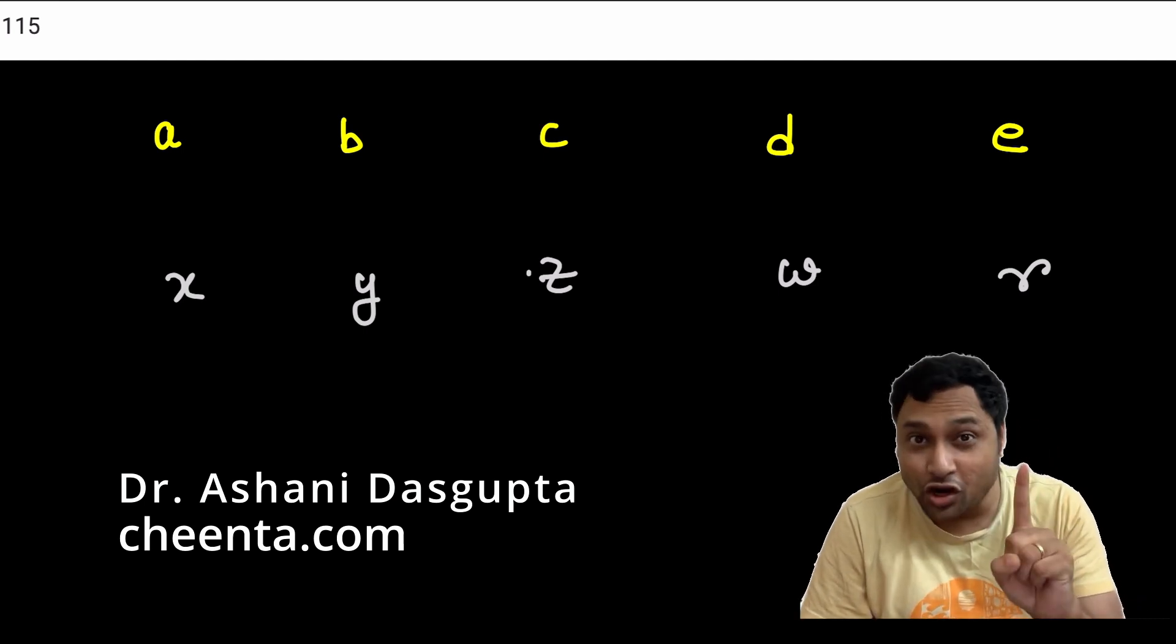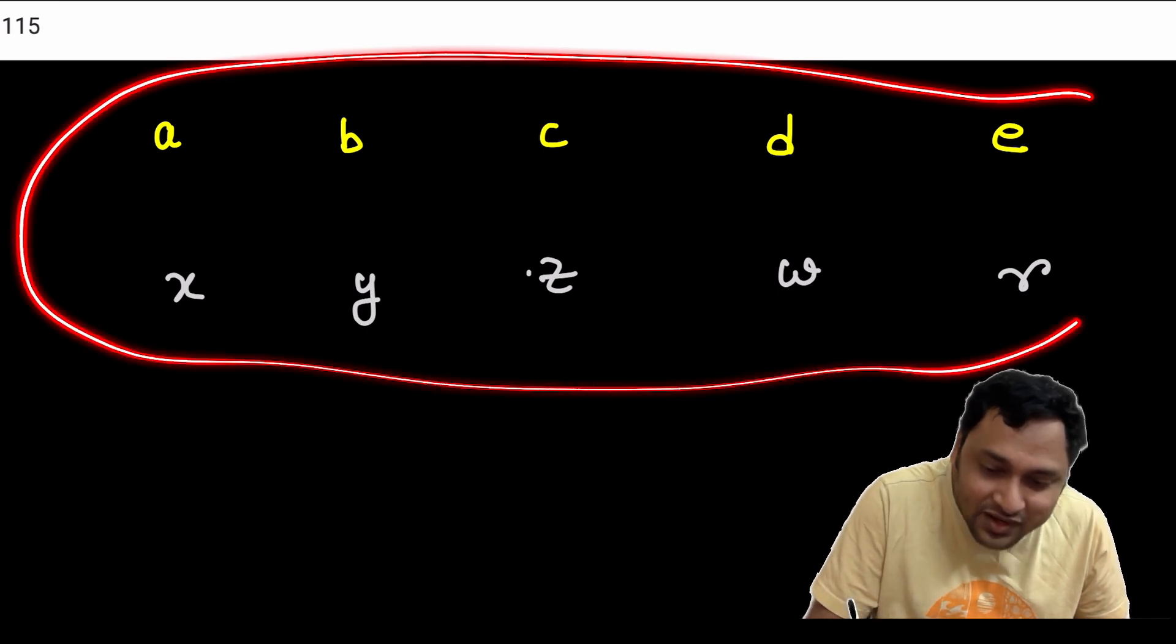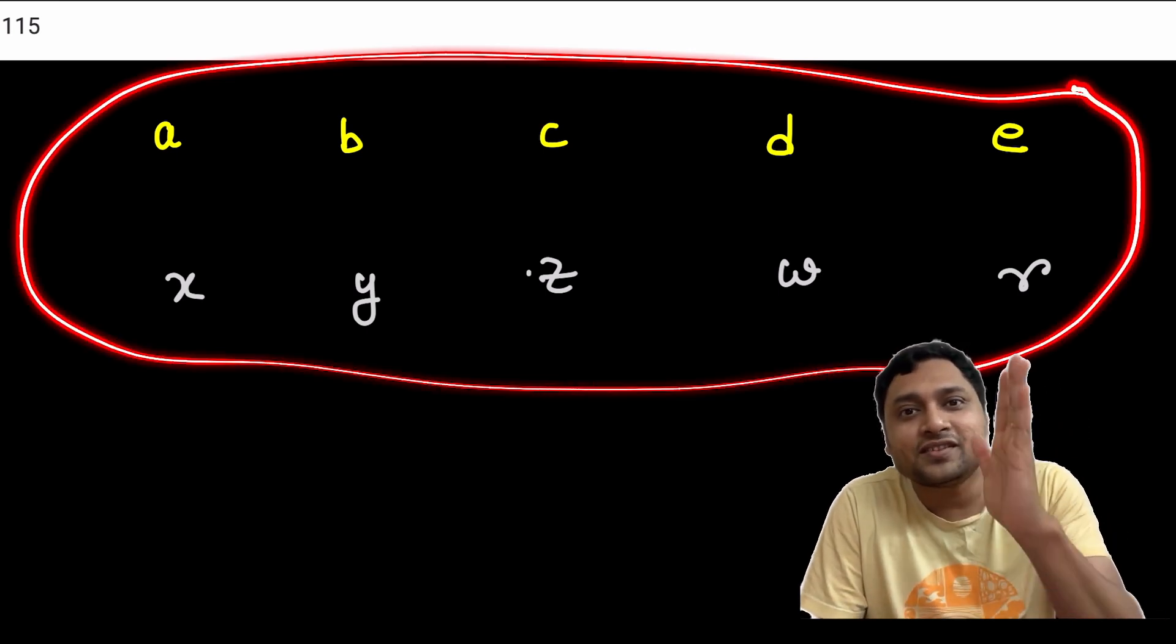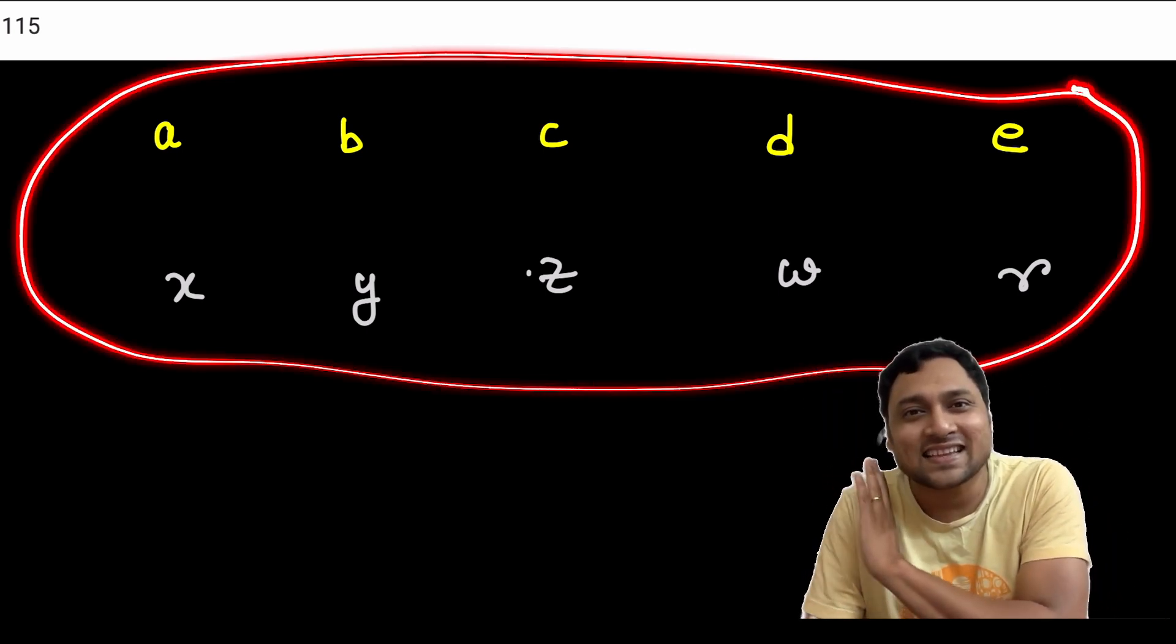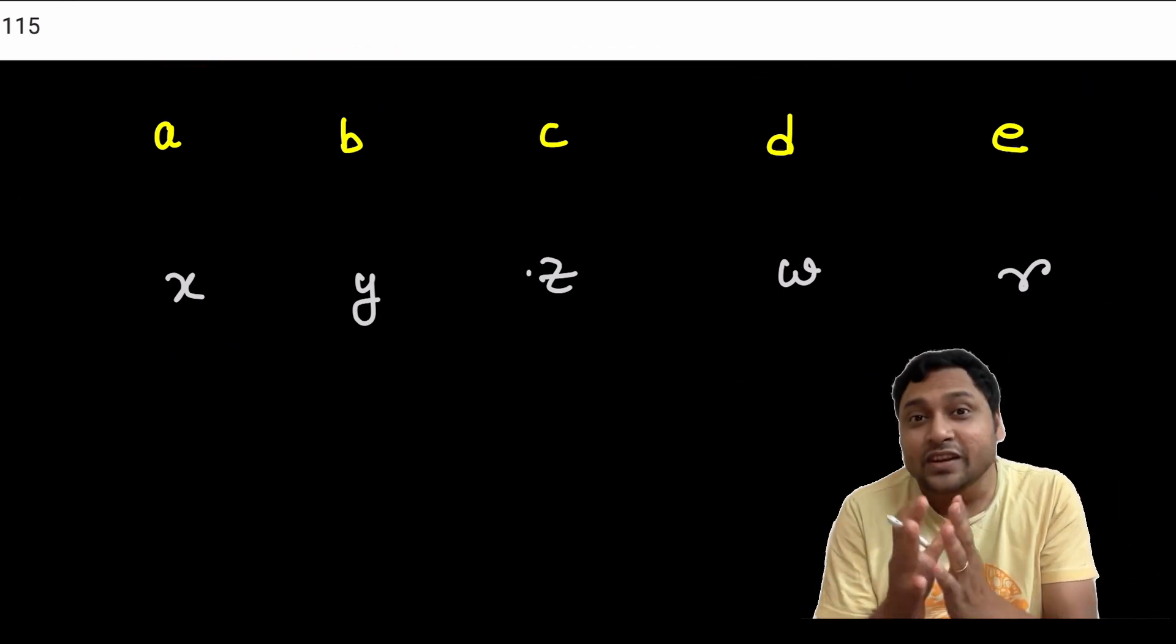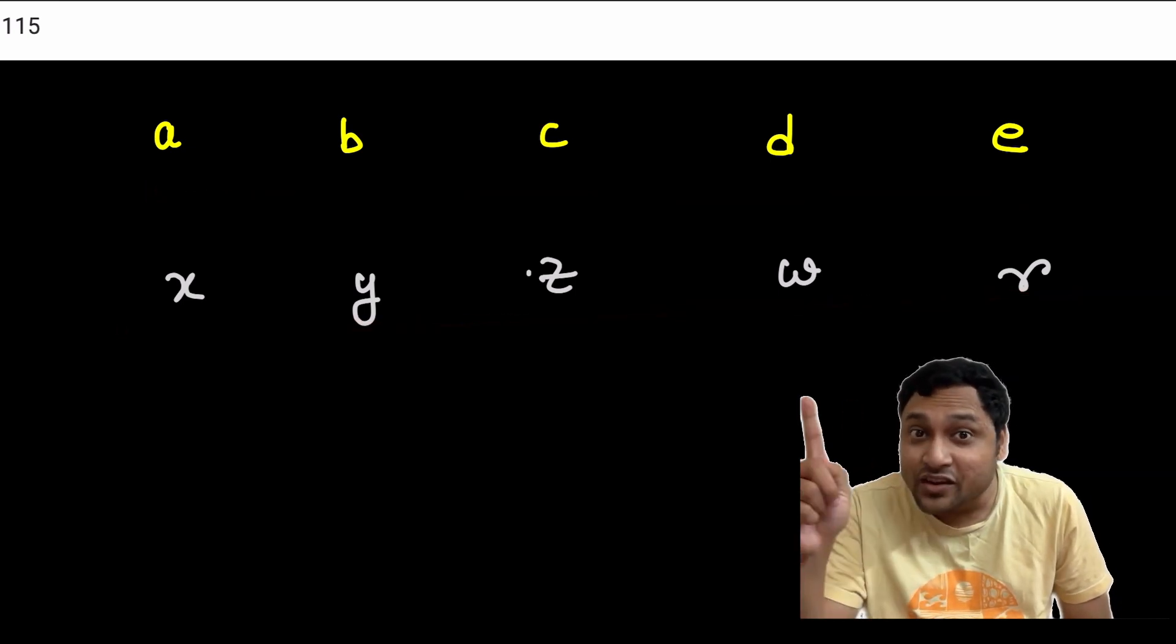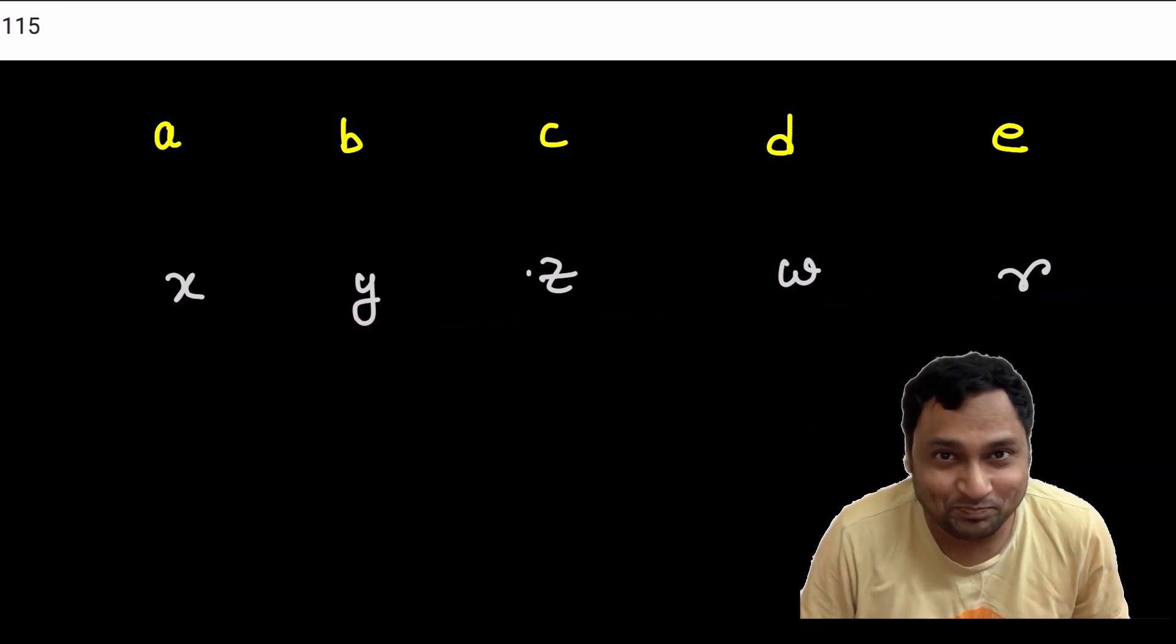Now, one thing is for sure. These 10 numbers are the numbers 1, 2, 3, 4, 5, 6, 7, 8, 9, 10. We do not know which is which, but we know that these numbers are those 1, 2, 3, 4, up to 10 numbers.